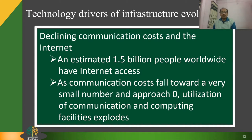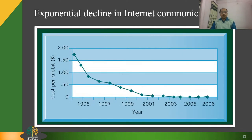With declining communication costs, consider how far communication and computing has come over time. Imagine the status of any friends or family who don't have internet access — we should remember the earlier days, life before the internet, and how inconvenient those days were for getting information. From the graph on the screen, it is evident that communication cost per kilobit has come to nearly zero since 1995.